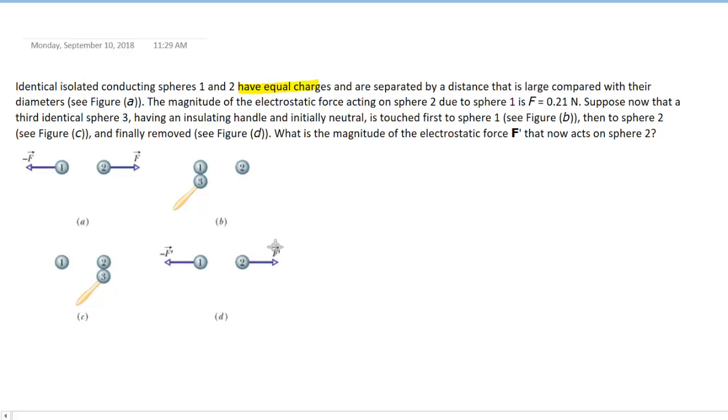The fact that they have equal charges means that we can represent the charge on each one as Q. We'll assume that they're positive, although the analysis would also work if they were negative. And they're separated by a certain distance, and as a result of the fact that they're charged, they're going to have an electrostatic repulsive force.